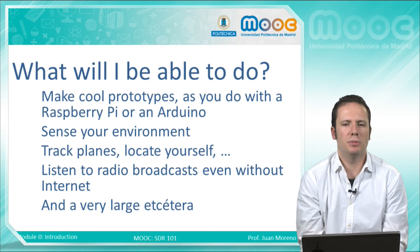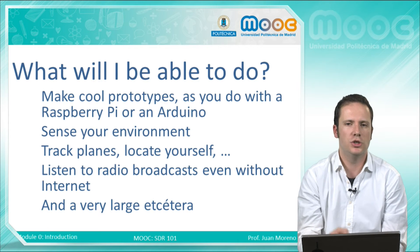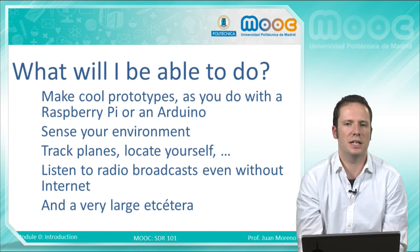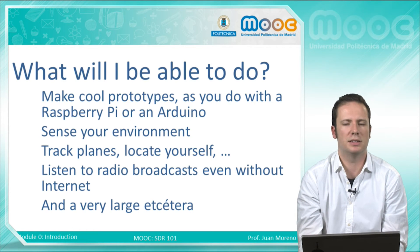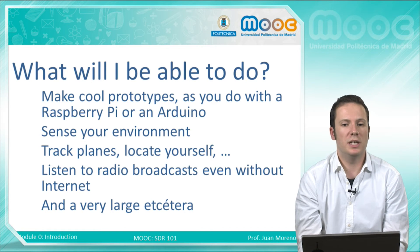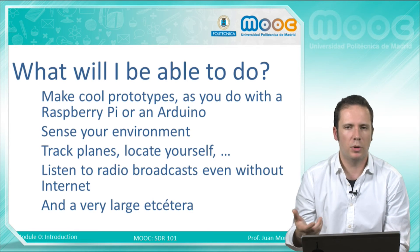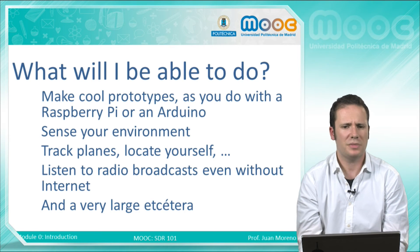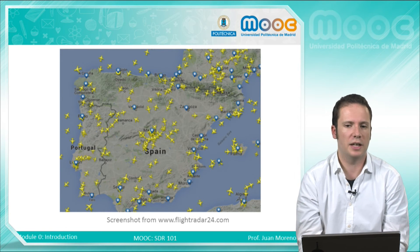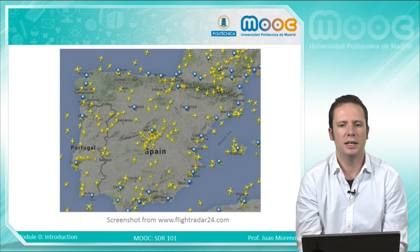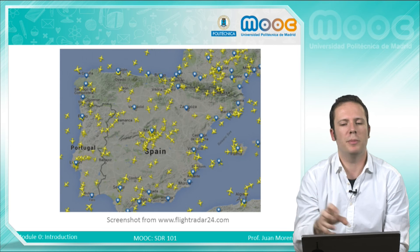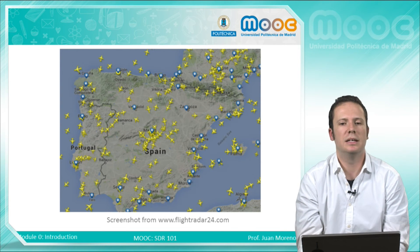About the applications I mentioned before, we have some examples. The first one is to track planes — it's very easy to track planes once you are able to receive some information being broadcasted by them. Also, you will be able to locate yourself with more or less accuracy. You will be able to listen to radio broadcasts even without internet, and you will be able to implement a very simple door opener with a remote control, and a lot more. This is a screenshot from FlightRadar24.com, a very cool website that gathers all the information broadcasted by every plane — it's a very useful tool.